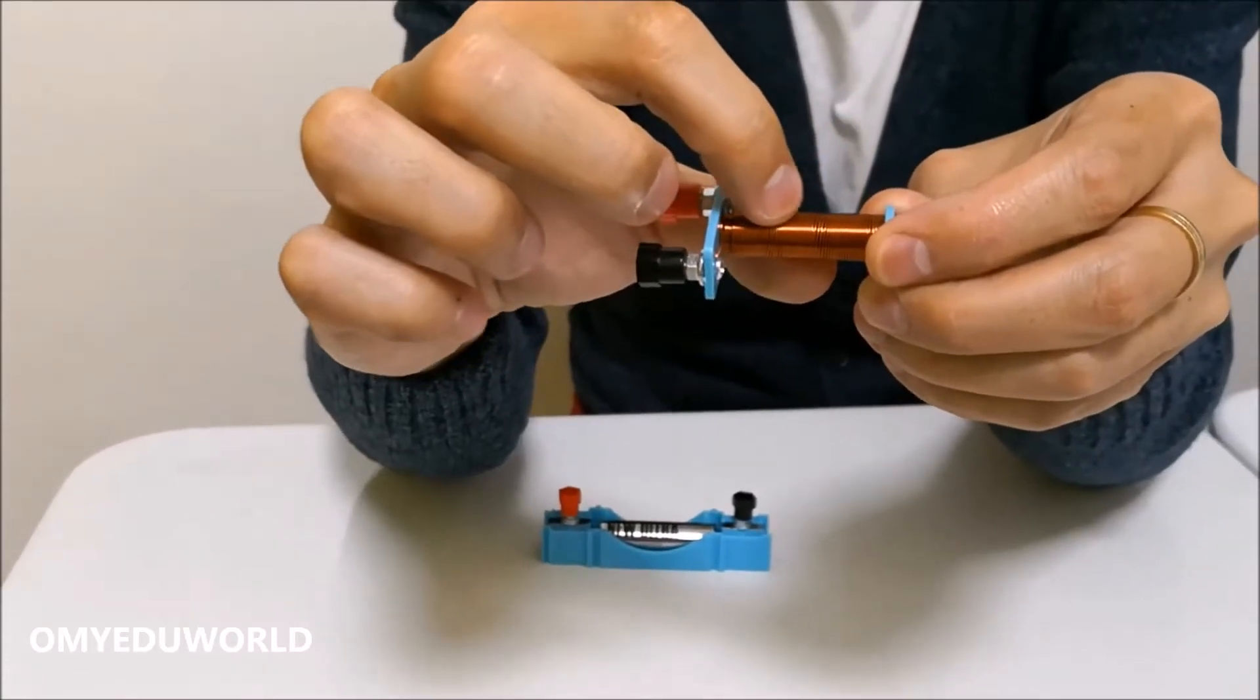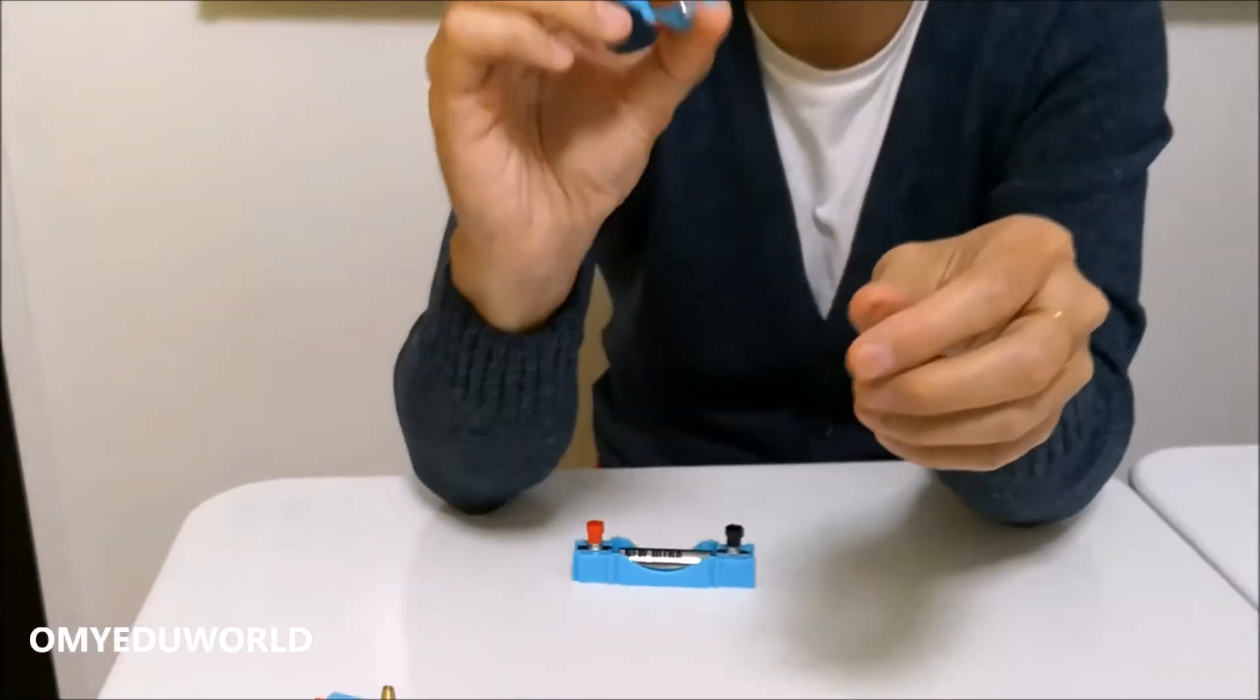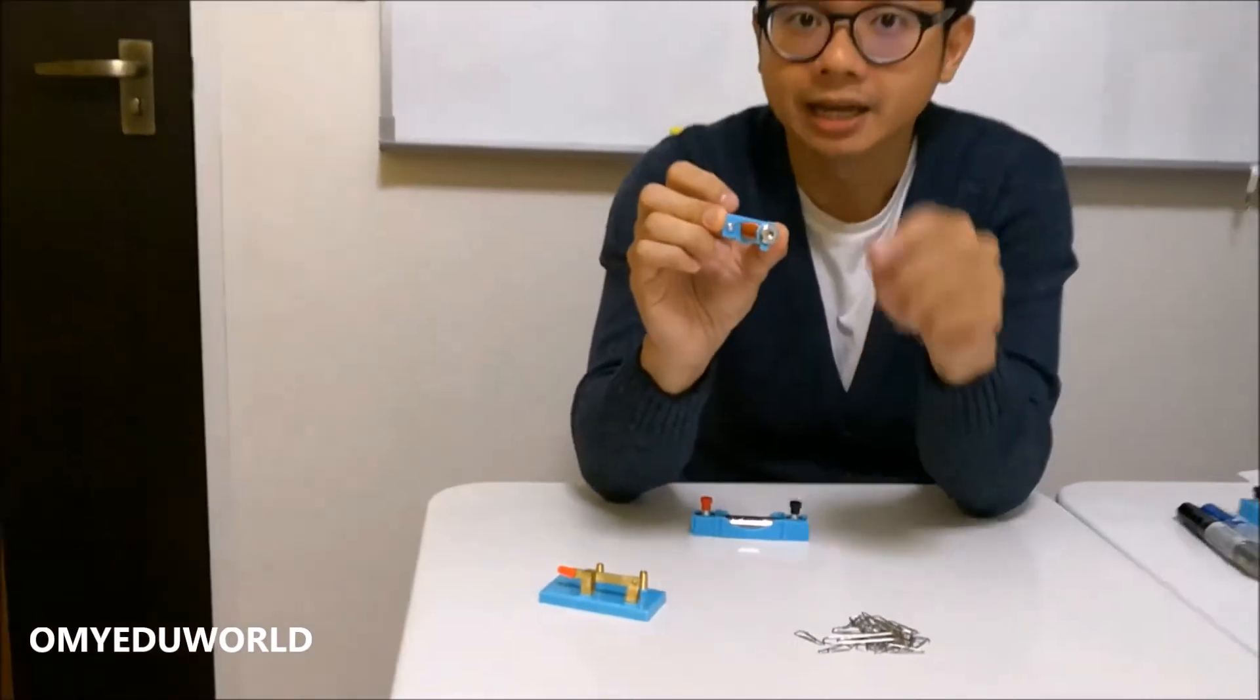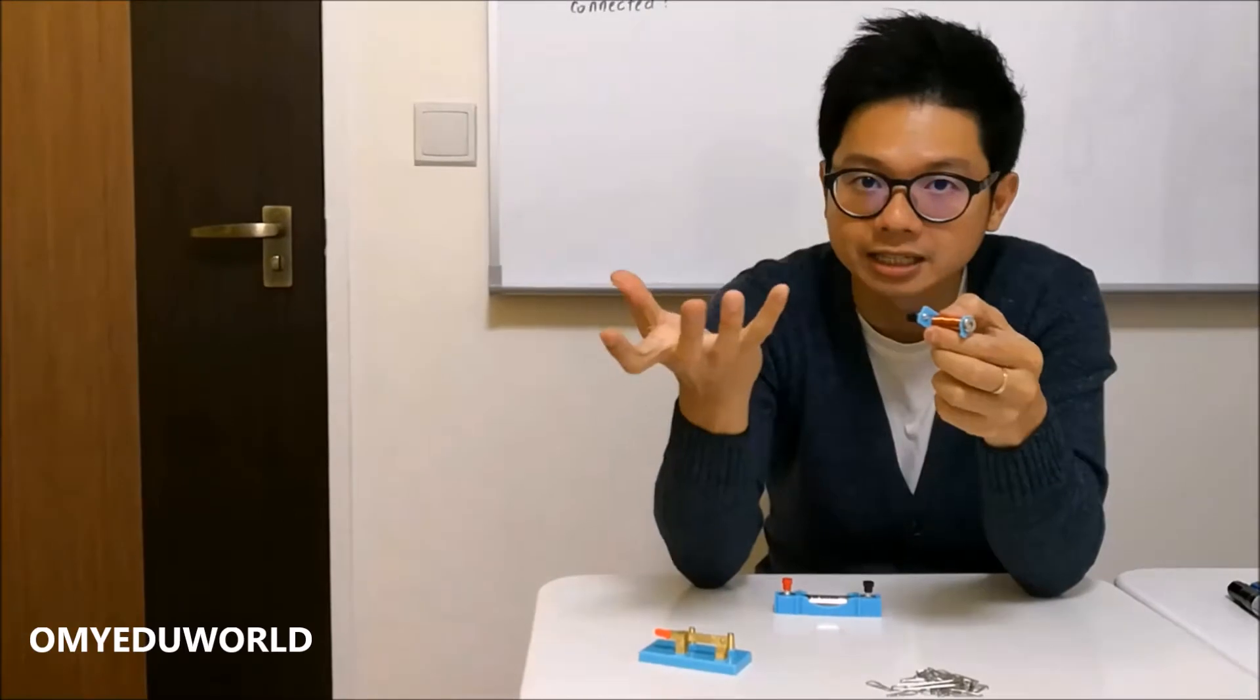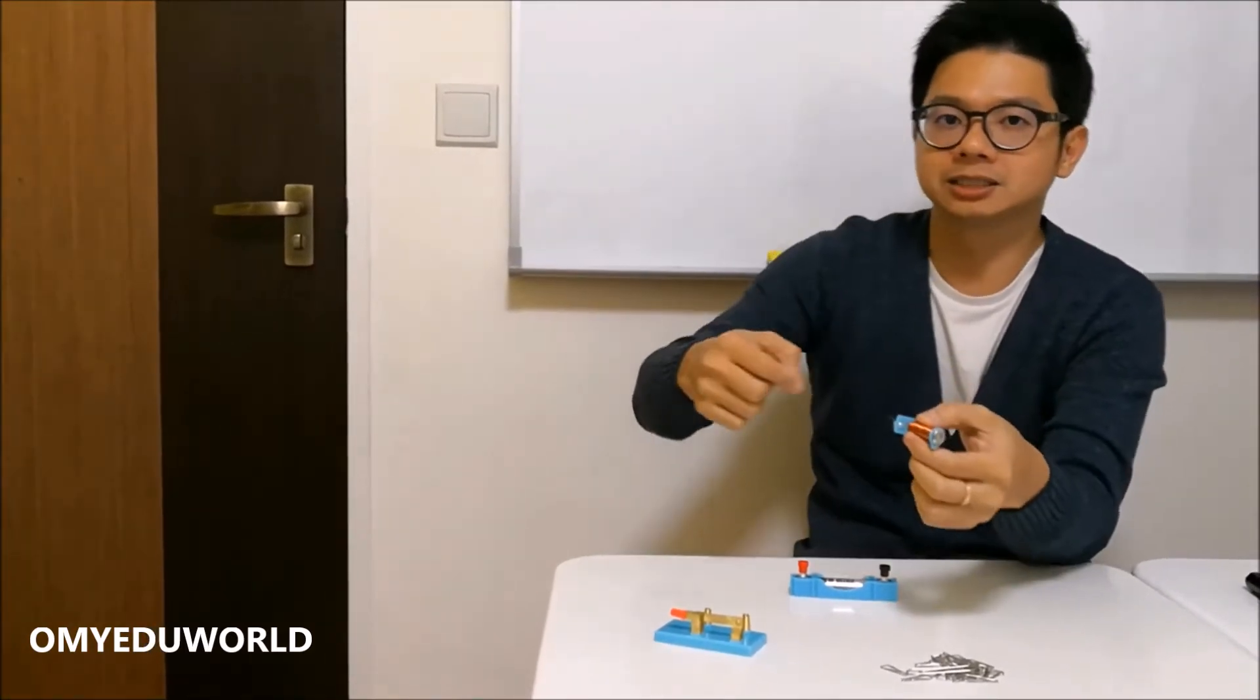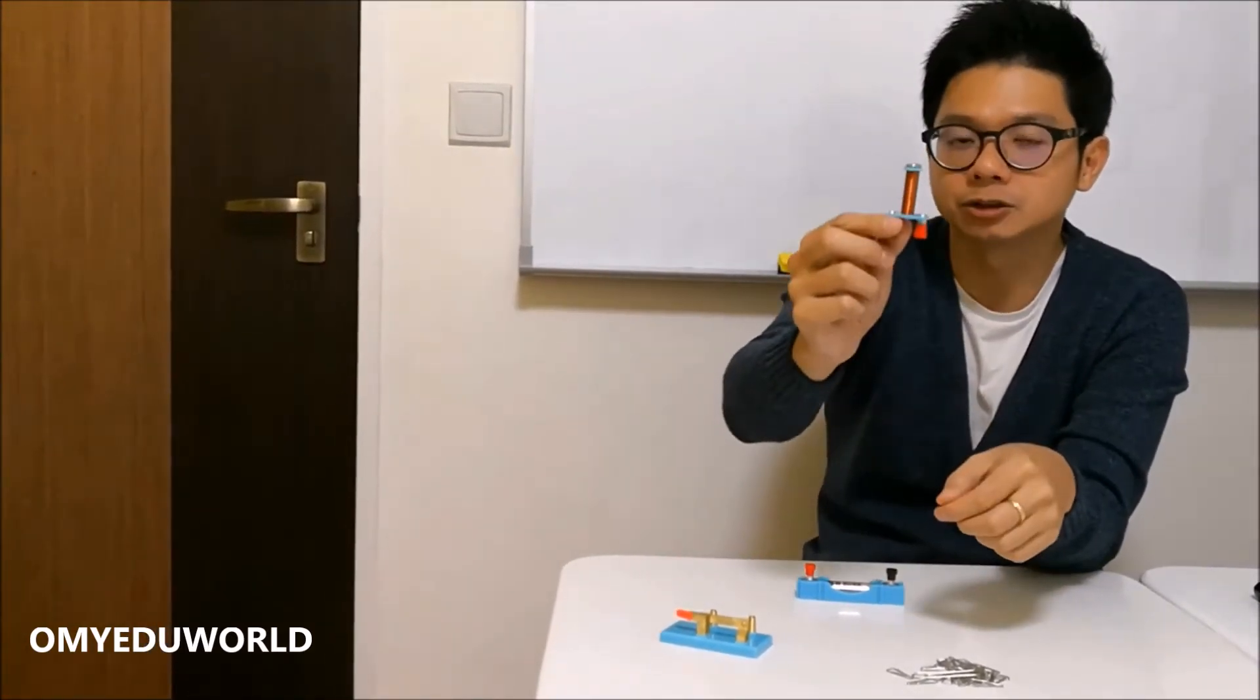As the name suggests, 'electro' means electricity, and then you have a magnet. So that means if you pass electricity through this electromagnet, it becomes a magnet.